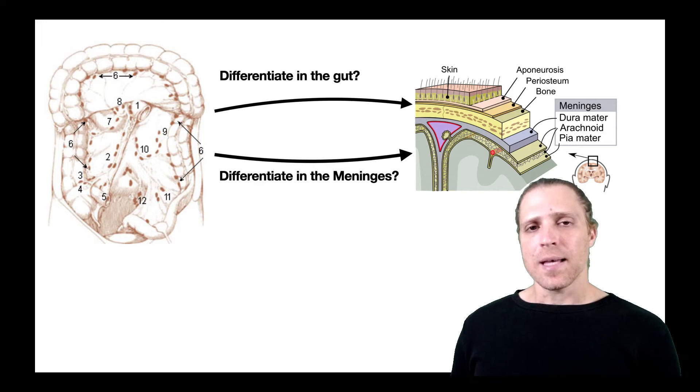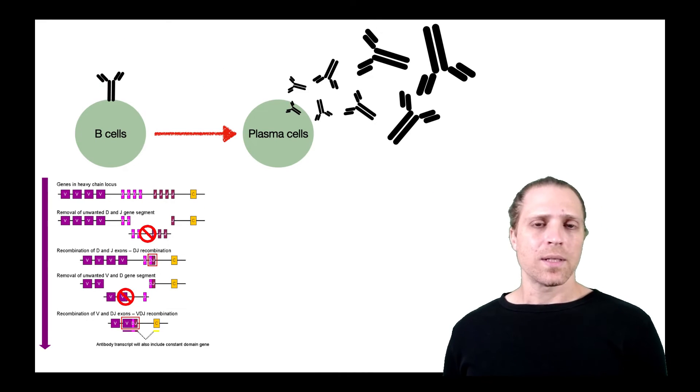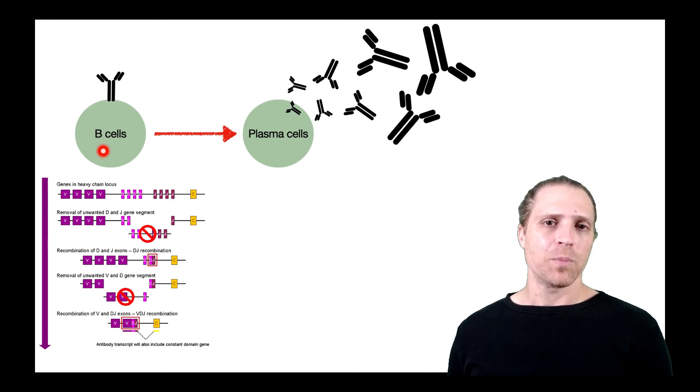Now, the authors asked themselves whether the B cells that are present in the meninges first differentiated in the gut, or that the B cells first migrated into the meninges and then differentiated into the final form. So in order to understand that, we need to go through the development of B cells.